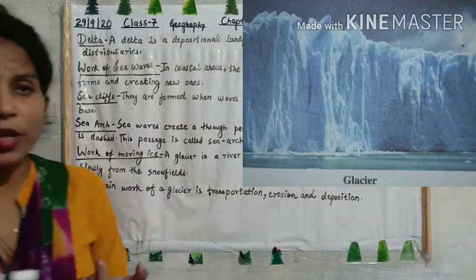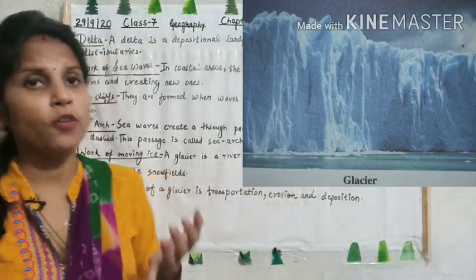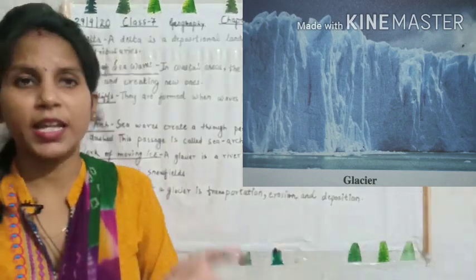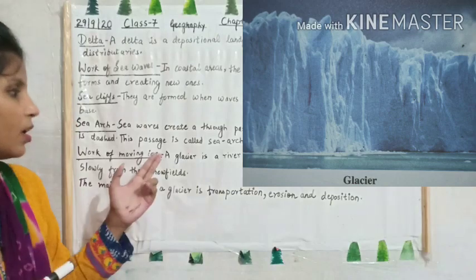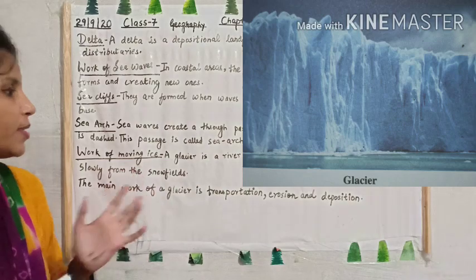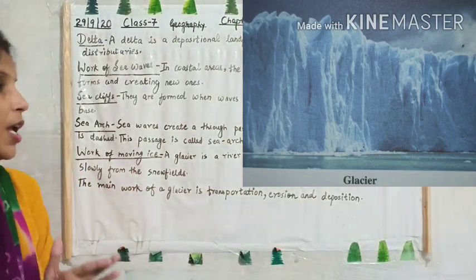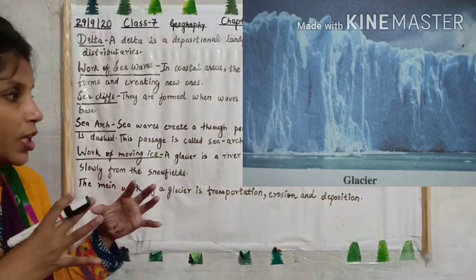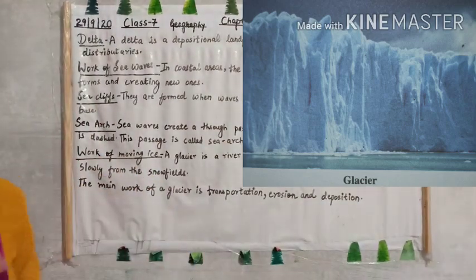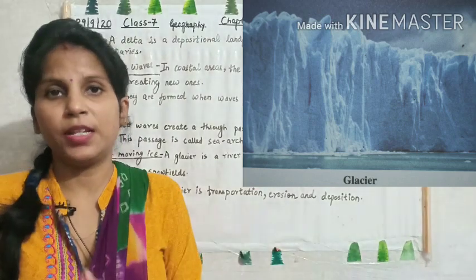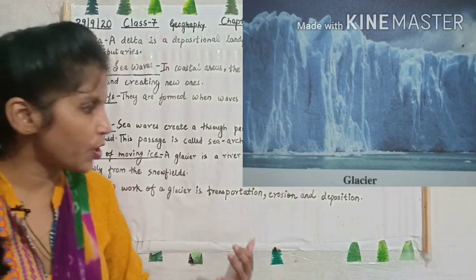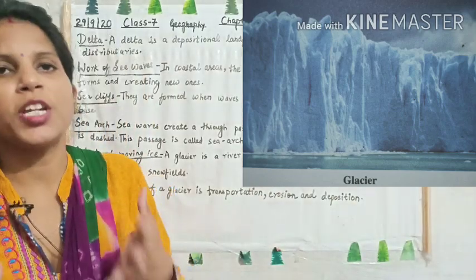Now, work of moving ice. A glacier is a mass of ice that moves out very slowly from the snow fields — it is like a snow river. The main work of a glacier is transportation, erosion, and deposition.